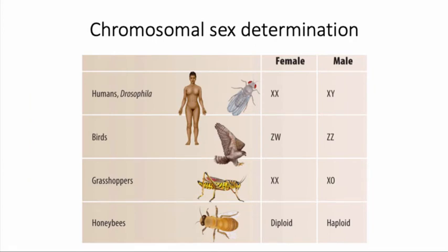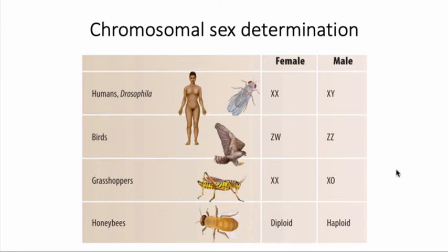We also have multiple ways of chromosomal sex determination. In humans, females have two chromosomes of the same type — two X chromosomes — while males have an X and a Y. We also see this system in fruit flies. In birds it's the opposite: females have two different chromosomes, a Z and a W, while males have two Z chromosomes. In grasshoppers, females have two sex chromosomes but males are diploid for all other chromosomes yet have only one sex chromosome. In honeybees, females are diploid for all chromosomes while males are haploid for all chromosomes.